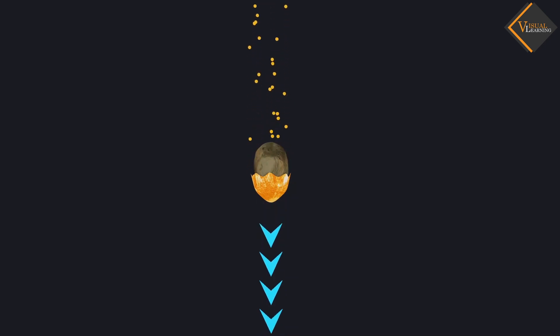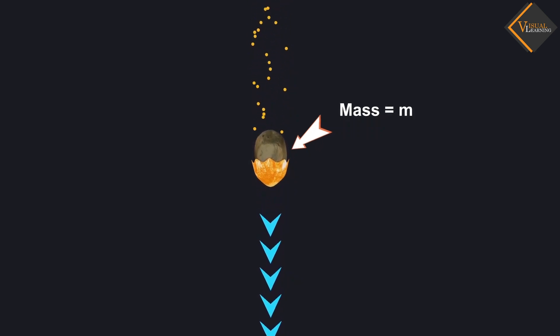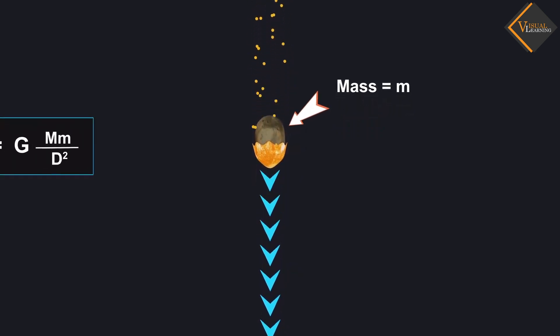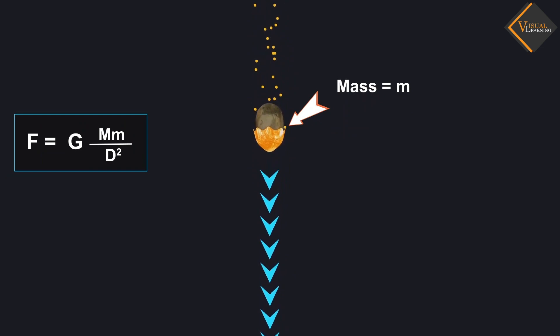Now, consider a stone having mass m is falling towards the Earth. And this free fall is due to the gravitational force, which is GMm divided by D squared.